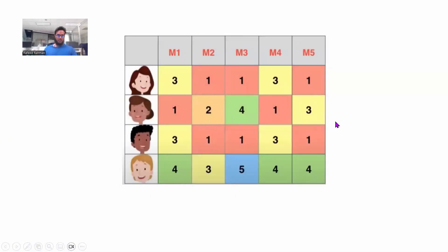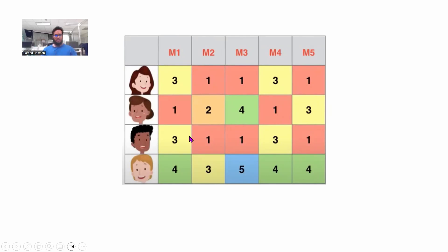Let's look at this matrix. You can see 4 people and 5 movies. Each person has given some rating to each movie. For example, person 1 has given movie 1 a rating of 3, and person 3 has given movie 3 a rating of 1. The rating is out of 5, so a rating of 5 means the person really liked the movie. Let's see some dependencies in this matrix.